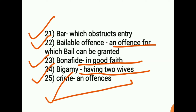Twenty-fifth is crime — you all know it is an offense. So bailable offense means an offense for which bail can be granted, bona fide means in good faith, and bigamy means having two wives. These are the important English vocabulary words related to legal language. Whenever you find these terms in different books, try to correlate and understand them properly. If you have any doubt, tell me in the comment box below, and do like and subscribe to my YouTube channel for more videos. Thank you so much.